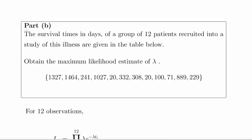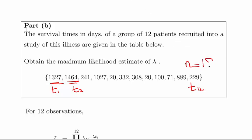The survival times in days of a group of 12 patients recruited into a study of this illness are given in the list. So t₁ — this person survived for 1,327 days; t₂ is 1,464, all the way up to t₁₂. In this particular study, n = 12, and I will flip back and forth between using n and 12 quite a bit.